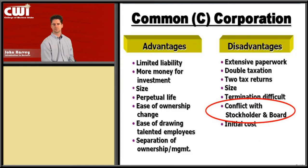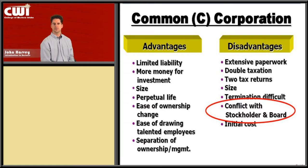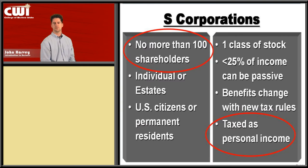The C corporation is the classic corporation — when you think of IBM, HP, Microsoft, or Walmart. One important thing to note is the potential conflict between stockholders and the board of directors. A corporation may be performing in a certain way or taking on certain activities, and how they accomplish things may be against what the shareholders want. That conflict is a disadvantage of the C corporation.